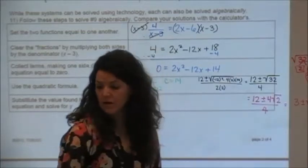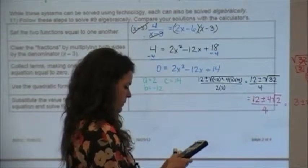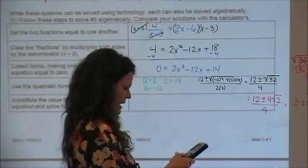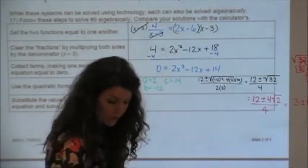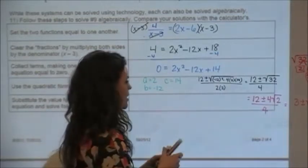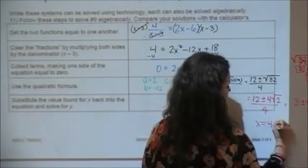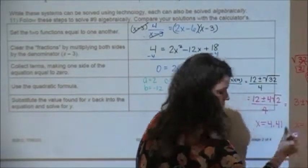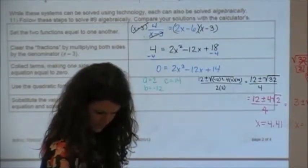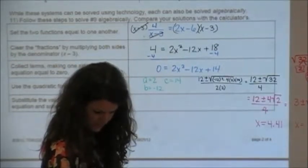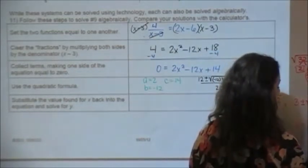I just want to see if my exact answer is the same as the decimals I got, so I'm just going to put 3 plus the square root of 2 in my calculator. I got 4.414. I think we just went to two decimals, so x equals 4.41. And x equals, I'm going to do 3 minus the square root of 2, and I got 1.59, which is what I got when I put it in my calculator.